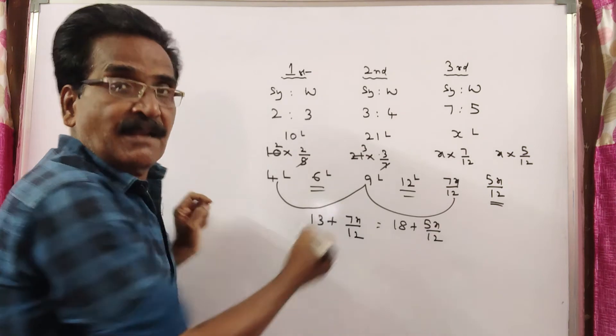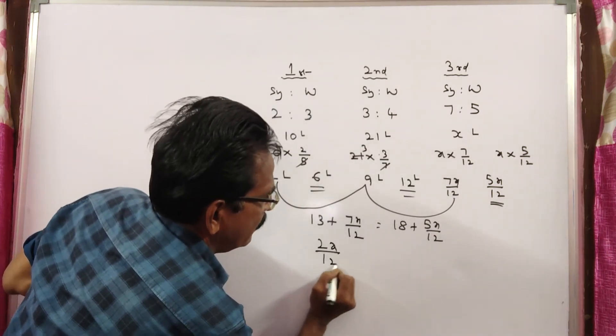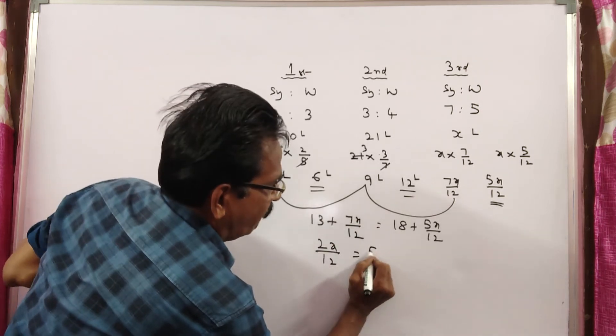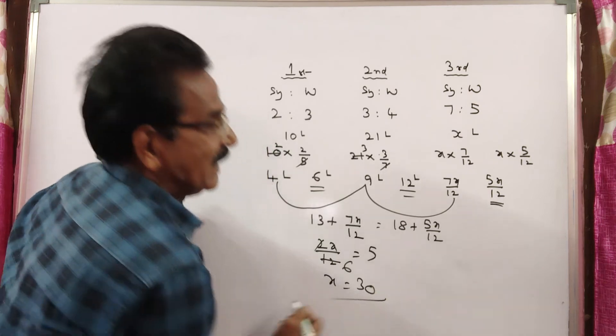So 7x/12 minus 5x/12 equals 2x/12, which equals 18 minus 13, which is 5. Therefore x equals 30. So 30 liters